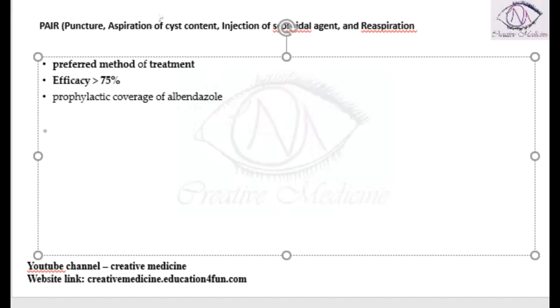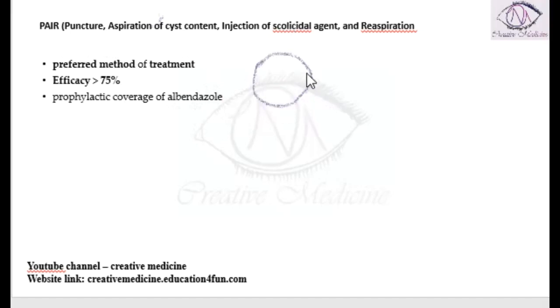So as the name says, if this is the cyst, first you will puncture the cyst. And then you will introduce a needle and you will aspirate the whole material.